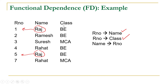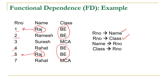Is class functionally determining role number? You can see that when class is BE, we are getting multiple values of role number: 1, 2, 4, and 5. So class is also not functionally determining role number. In this case, role number is functionally determining name and role number is also functionally determining class, but name to role number and class to role number is not true. Only role number is determining name and class, because role number is unique.